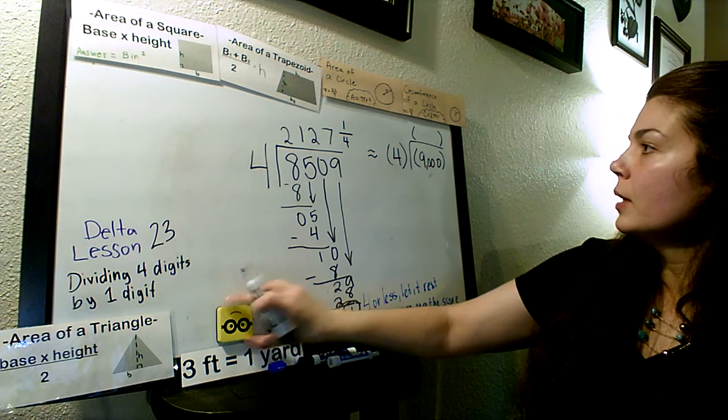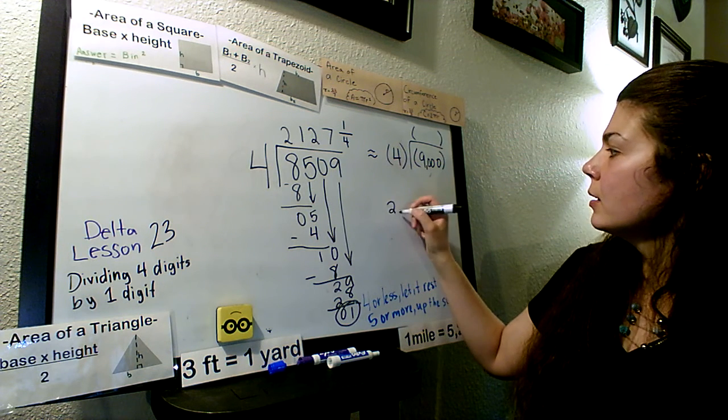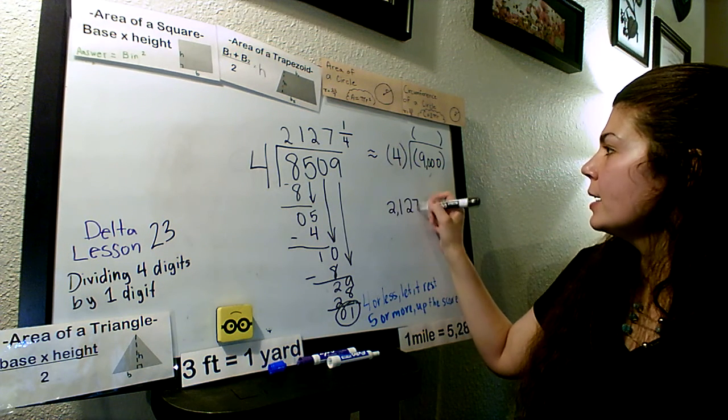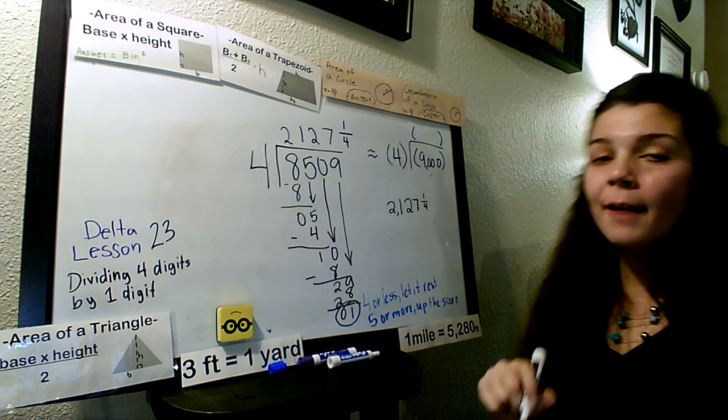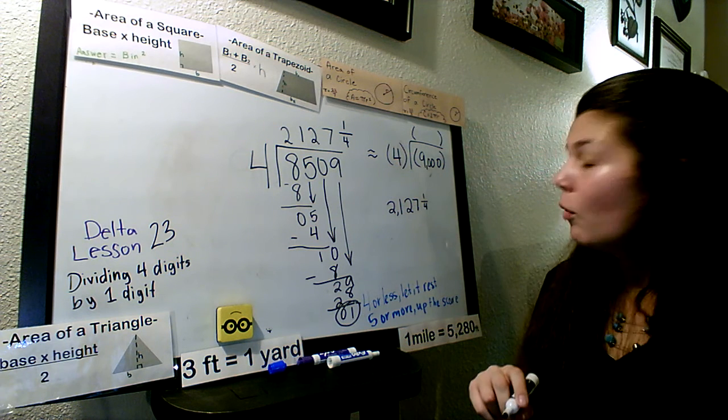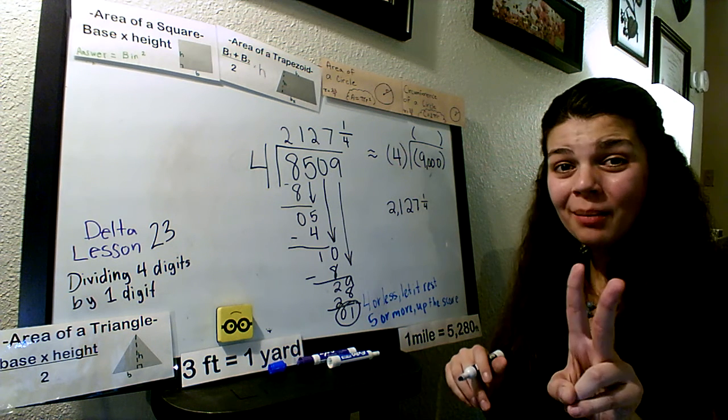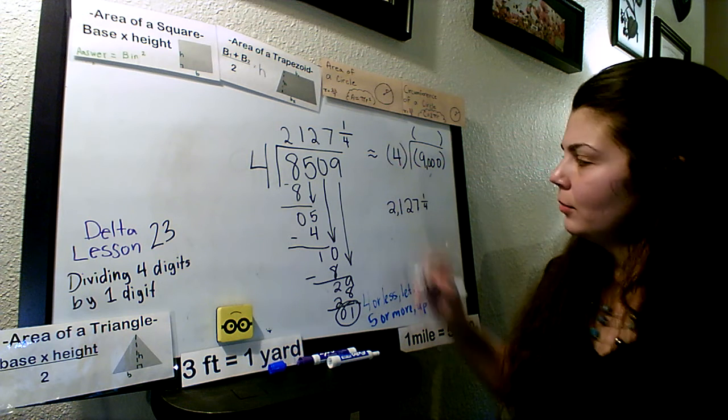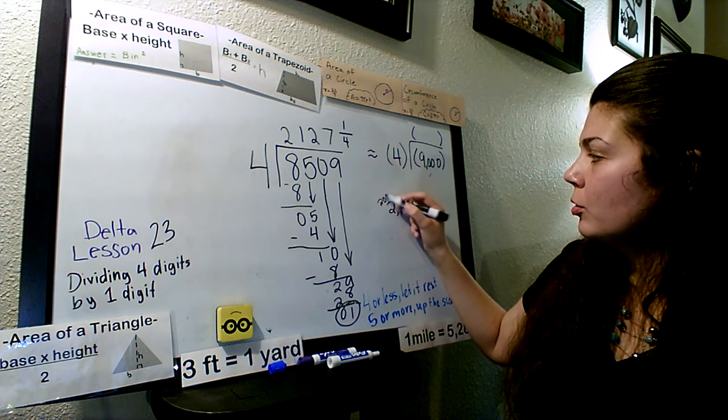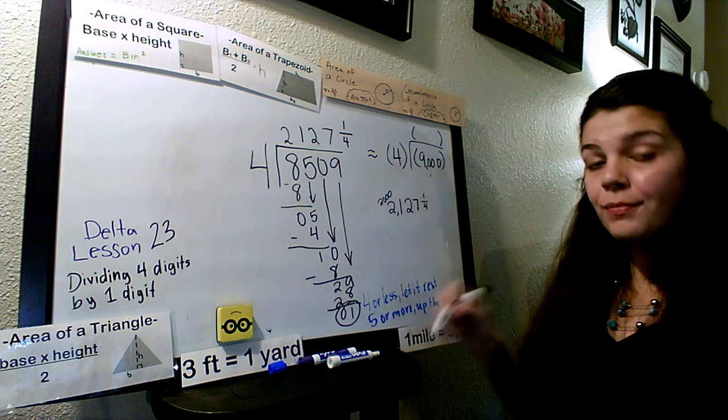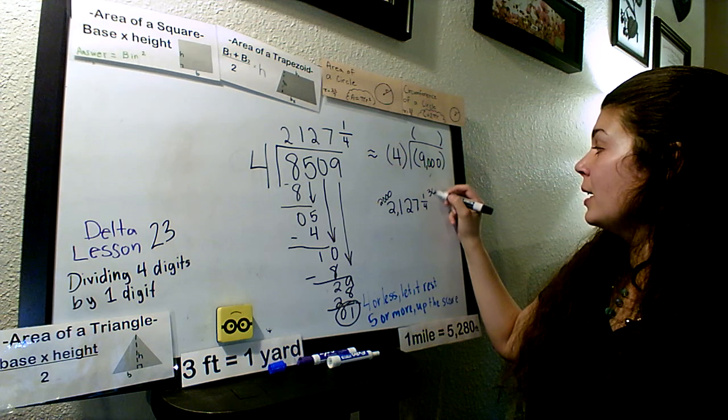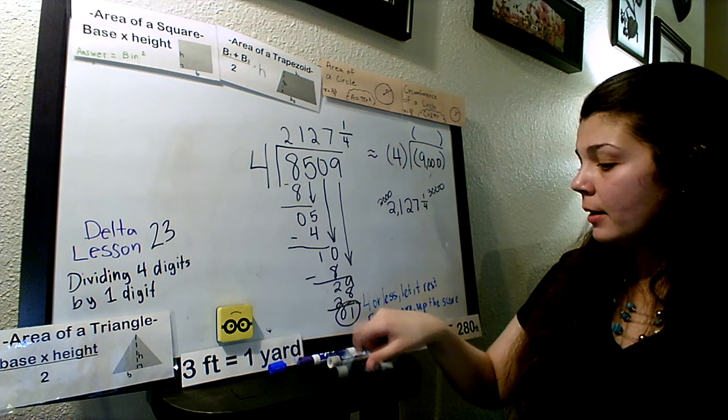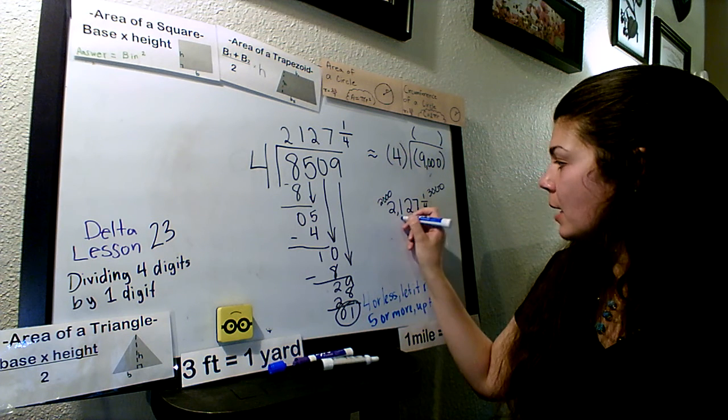And my answer, 2,127 and 1 fourth. Now what's my answer? What two numbers could my answer round up to or down? It could round down to 2,000 or it could round up to 3,000.